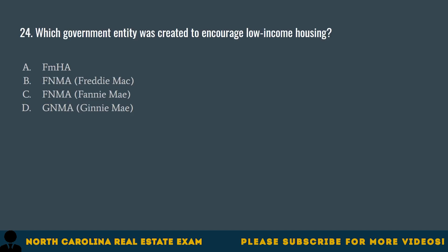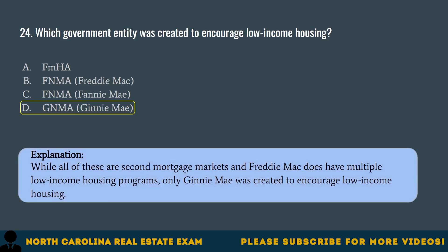Question 24. Which government entity was created to encourage low-income housing? A. FMHA. B. FNMA, Freddie Mac. C. FNMA, Fannie Mae. D. GNMA, Jenny Mae. The correct answer is D. GNMA, Jenny Mae. While all of these are secondary mortgage markets and Freddie Mac does have multiple low-income housing programs, only Jenny Mae was created to encourage low-income housing.